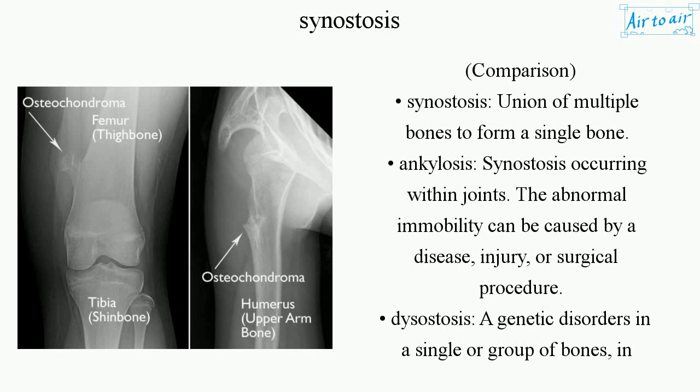Comparison: Synostosis is the union of multiple bones to form a single bone. Ankylosis is a synostosis occurring within joints — the abnormal immobility can be caused by a disease, injury, or surgical procedure.